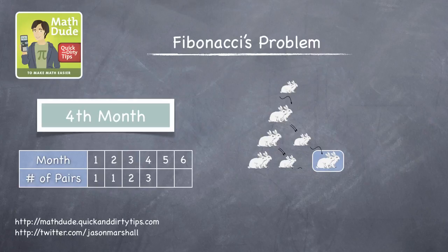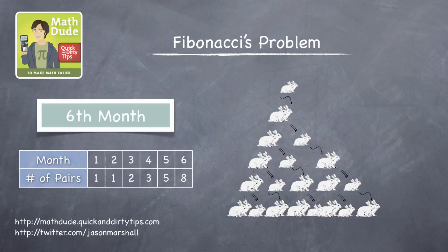Two pairs can now mate, and they each produce yet another new pair, giving a total of five pairs at the beginning of the fifth month. Now, three pairs can mate, so after the three new pairs of offspring are born, our total moves to eight pairs.